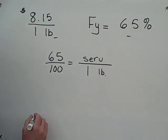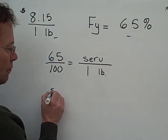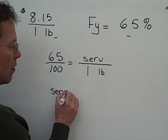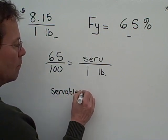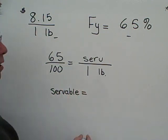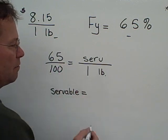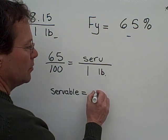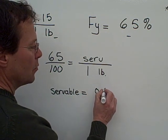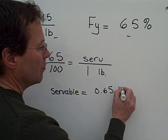Calculating that, we get that the servable amount of meat that we get out of that one pound will be 1 times 65 divided by 100, which comes to 0.65 pounds.